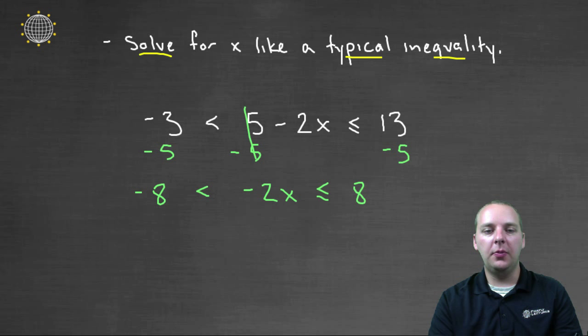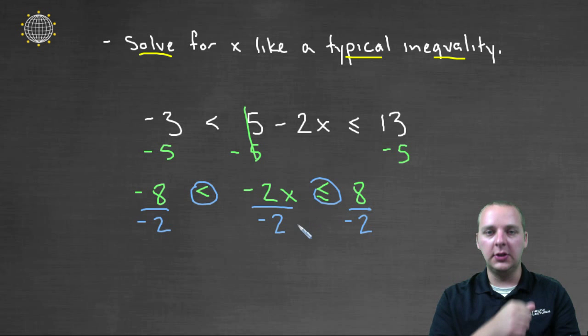Alright, the last step would be to divide by the variable's coefficient, as we're used to doing. But now we also have to be careful because we're now dividing by a negative. Not just the middle, but the left hand side and right hand side also is being divided by -2. And when you divide by a negative, as you well know, these inequalities are going to have to now face the other direction. So this will be a strictly greater than, as opposed to less than, and this will be greater than or equals to.